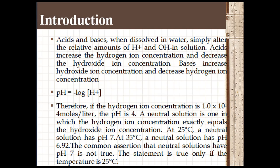pH is another way of expressing hydrogen ion concentration. pH is defined as the negative logarithm of hydrogen ion concentration at base 10. Therefore, if the hydrogen ion concentration is 1.0 × 10^-4 moles per liter, the pH is 4.